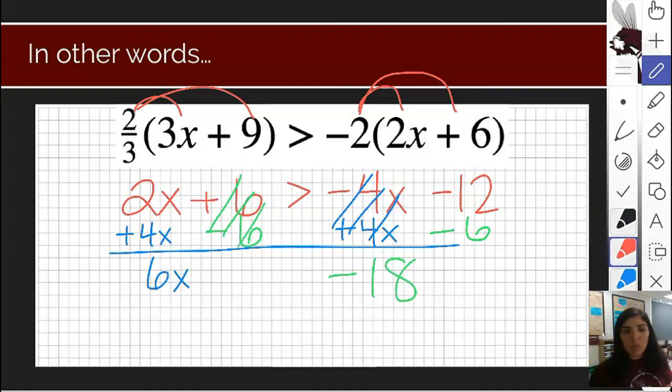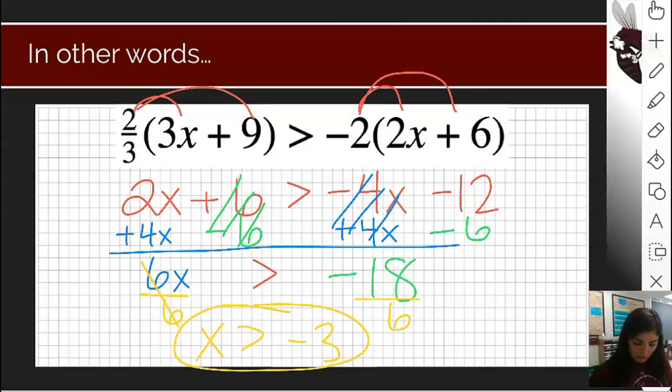Instead of putting an equal sign, I'm going to continue to write the symbol provided in the problem, which is greater than. We divide by the number that's left, the coefficient of the variable, and we get x is greater than negative 3. That expression tells me the numbers that are going to make this inequality true. Any particular number greater than negative 3, like negative 2, 0, 5, or 8,000, is going to make this a true mathematical statement.